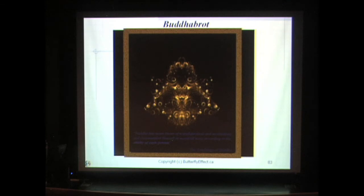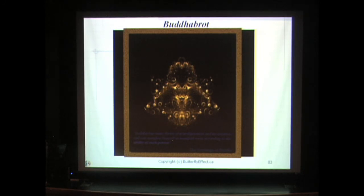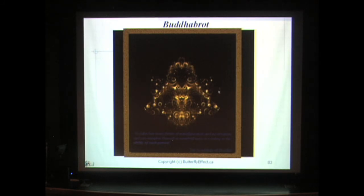Unlike the Bubble Universe image, which is generated using the points on the inside of the Mandelbrot set, this image is generated using only the outside points. When you generate a histogram of all the fractal dynamic fields from the points on the outside of the Mandelbrot set, this is what you get. Put simply, the Buddhabrot images emerge from the complex plane — my space-time continuum — by iterating the function z equals z squared plus c.